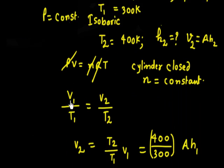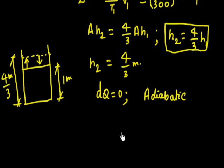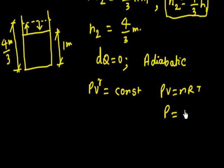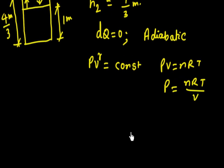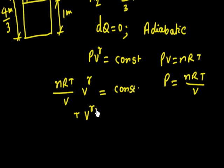With no loss of heat (DQ = 0), the process is adiabatic, so PVγ = constant. To find temperature, we convert using PV = nRT, giving P = nRT/V. Substituting into PVγ = constant yields TVγ⁻¹ = constant.